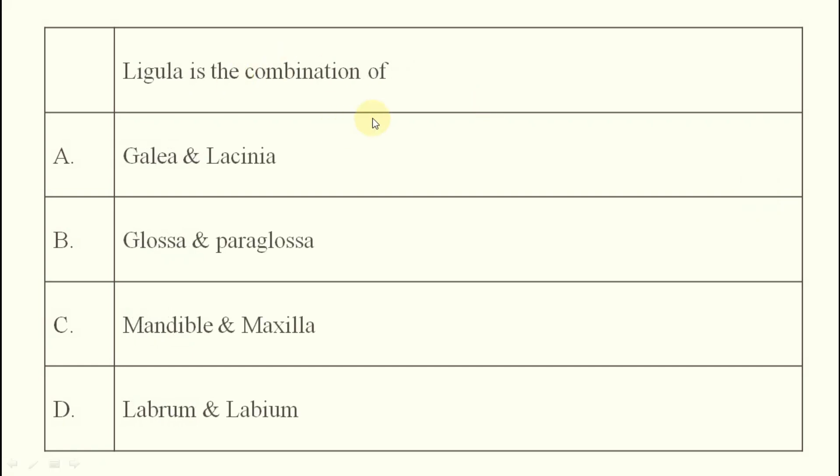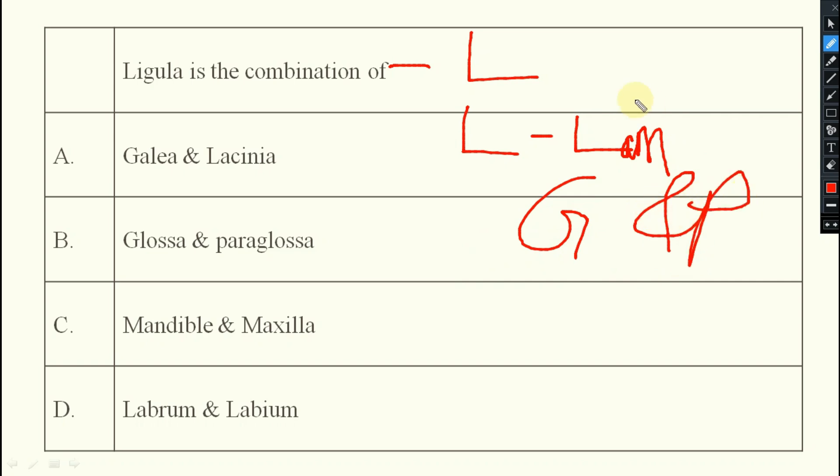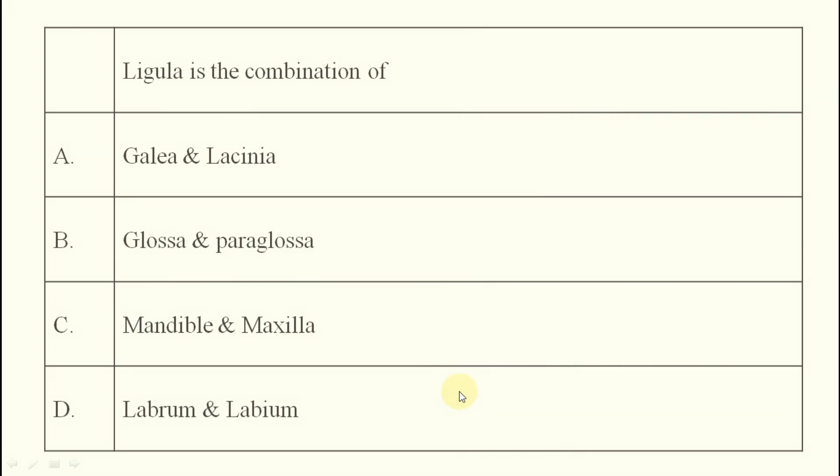Ligula is the combination of what? Here you need to remember ligula. L for ligula, L for labium. In labium which lobe-like structure are there? Glossa and paraglossa. So, your ligula equal to glossa and paraglossa. Mala equal to galea and lacinia. And ligula equal to your glossa and paraglossa. These are the things you need to remember.